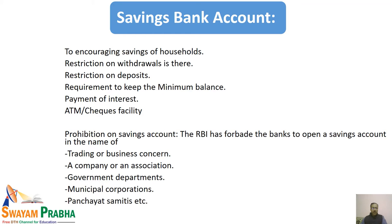In the case of private banks like ICICI and HDFC, the minimum balance is much higher compared to public sector banks like Union Bank of India or Punjab National Bank. Interest is paid on saving bank accounts, though it is not very high, and is regulated within a spectrum set by the RBI. If the minimum balance is not maintained, account maintenance charges are deducted from the account.